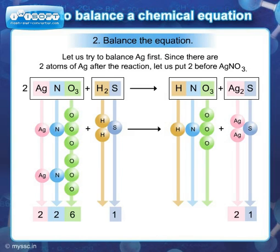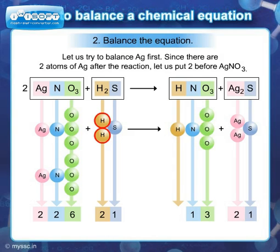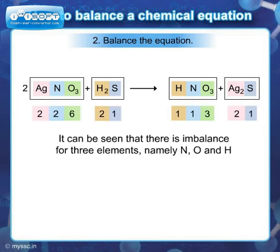If we compare the number of atoms for each element, we see that there are two atoms of N in the reactants and one atom of N in the products. Similarly, there are six atoms of O in reactants and three atoms of O in products. Also, there are two atoms of H in reactants and one atom of H in products. Thus, there is imbalance for three elements: N, O, and H.